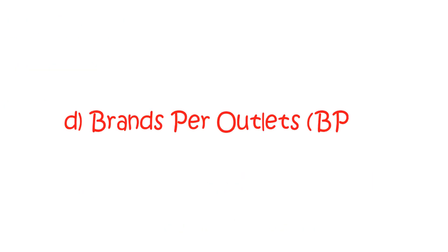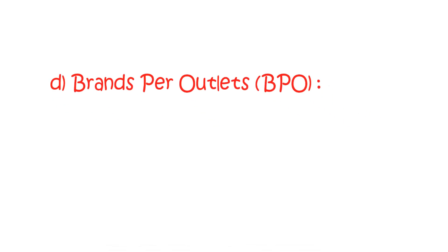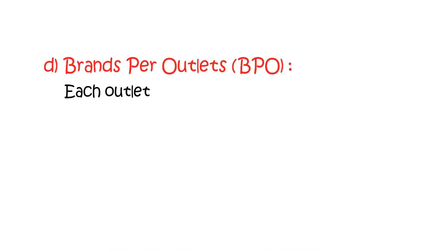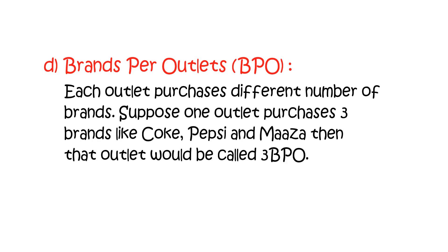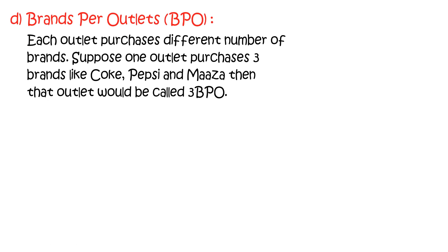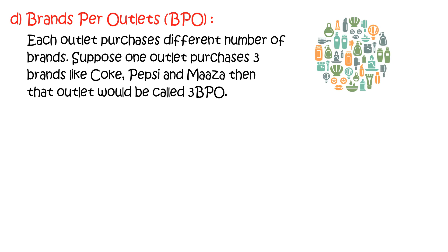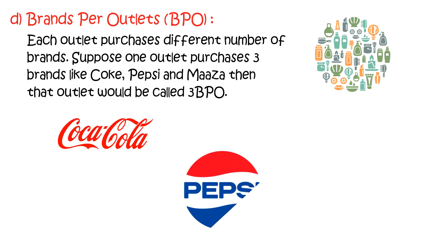Finally, brands per outlet, or BPO. The number of unique brands sold to a retailer is brand per outlet. Each outlet purchases a different number of brands. Suppose one outlet purchases three brands like Coke, Pepsi, and Marza — then that outlet would be called 3BPO.